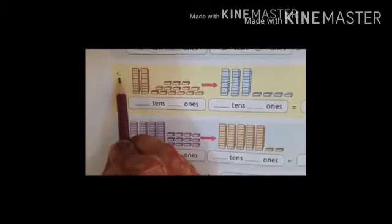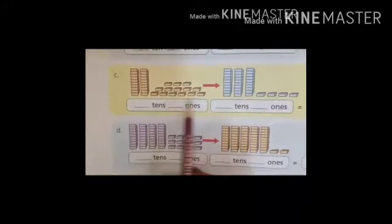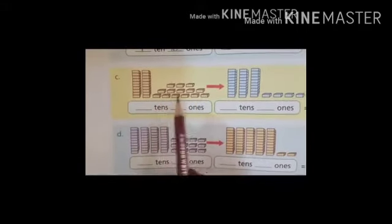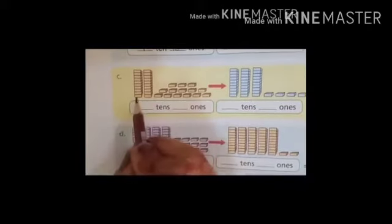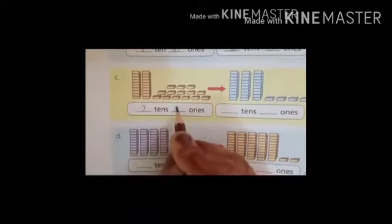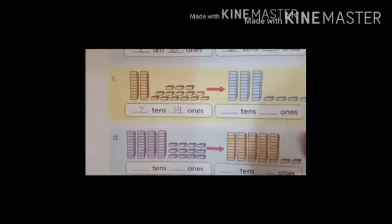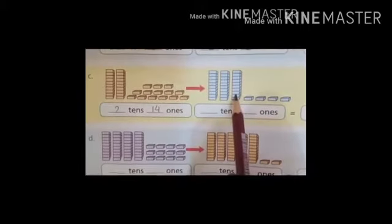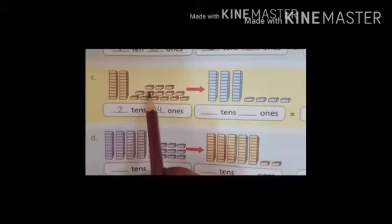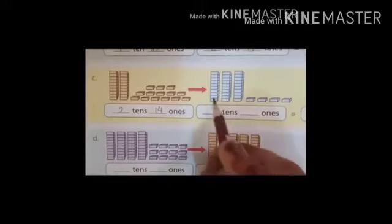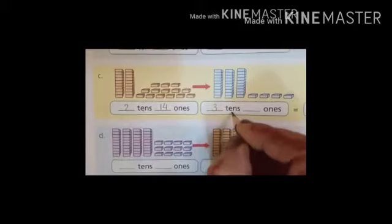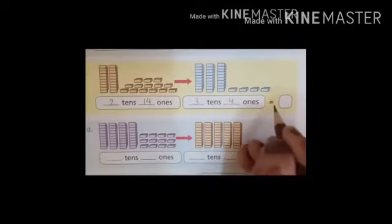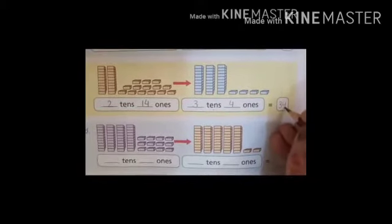Look at part C. There are two tens, and these are one blocks. Count: one, two, three, four, five, six, seven, eight, nine, ten, eleven, twelve, thirteen, fourteen. And fourteen ones. We have to write two tens and fourteen ones. Now, two tens mein one ten more plus karenge. Ones ke blocks mein se ten blocks ka one ten ban jayega. Count: one, two, three, four. Ab humari paas remaining ones blocks jo hai, wo humari paas four hai. Students, ab dekhe hai, value change ho gai. Three tens and one, two, three, four - four ones. Three tens, four ones is equal to thirty-four. We have to write thirty-four in the box.